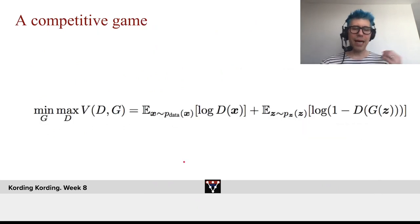Now, technically, this is a competitive game. You can say what we are looking for is the minimum over the generators of the maximum of the discriminators of the relevant value function that depends on the discriminator and the generator.